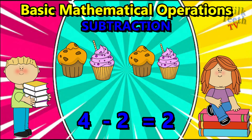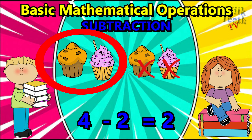Here we have four cupcakes and we would take away two from them. So let us reduce or lessen two cupcakes from four — how many do we get? Two. So four minus two equals two.